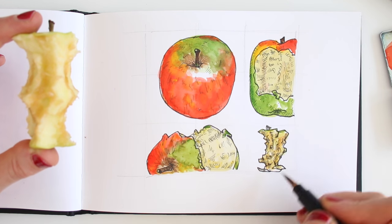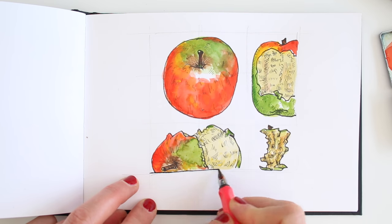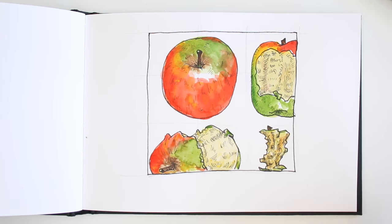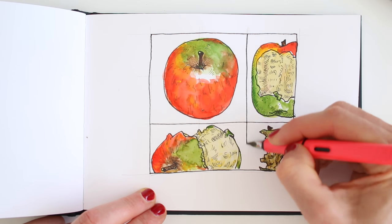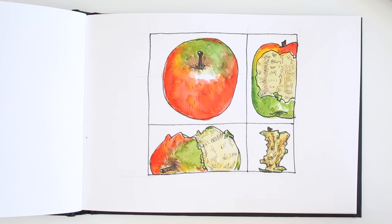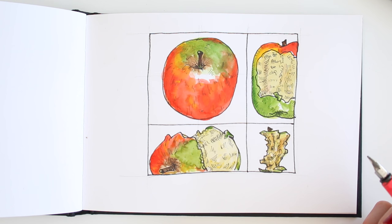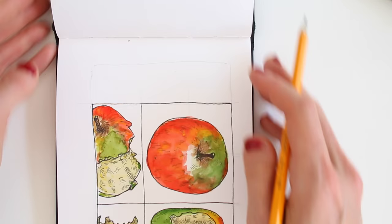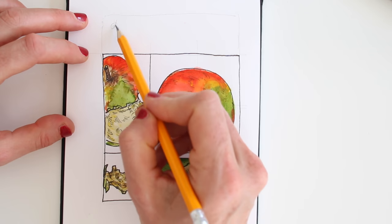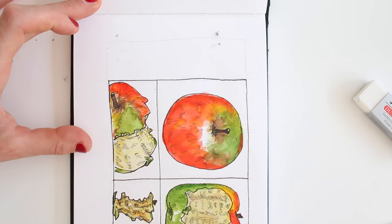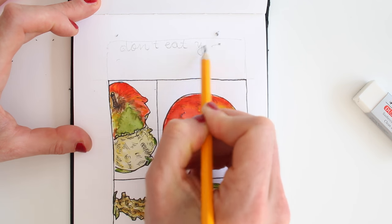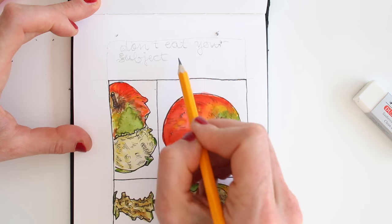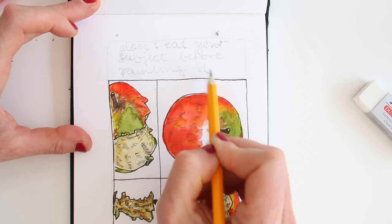What I can do now is also ink the grid as a frame around my drawing, wobbly and all. I didn't leave a frame for lettering, didn't really think about this. So let me see, I could add something here and then write something here. I wrote down the lesson that I learned today: don't eat your subject before painting it.